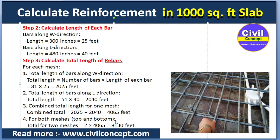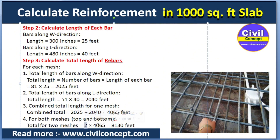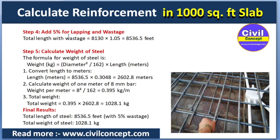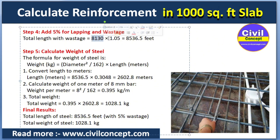Since we have a double mesh — top and bottom — we multiply the combined length by 2. This gives 4065 × 2 = 8130 feet for the whole slab. Note: if the diameter of the top mesh and bottom mesh are different, you cannot simply multiply by 2, as the quantities may differ. Now, adding 5 percent extra for lapping and wastage: 8130 × 1.05 = 8536.5 feet total rebar length.